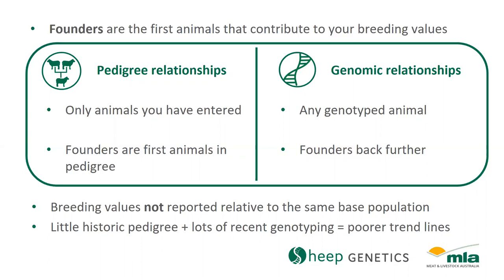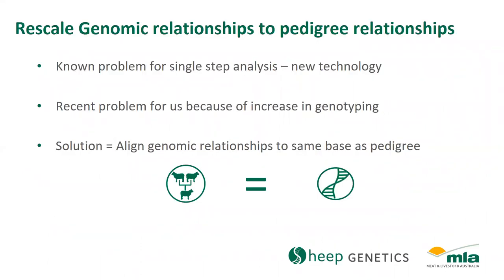We found this affected some flocks with shallow pedigree and lots of recent genotyping. These polar trend lines are a known problem for single-step analysis. Single-step analysis is a relatively new technology and we are improving it all the time. We could fix it now because some flocks really increased their genotyping lately, and we could see the impact of this genotyping and make the appropriate adjustments. These adjustments align genomic relationships to pedigree relationships better.